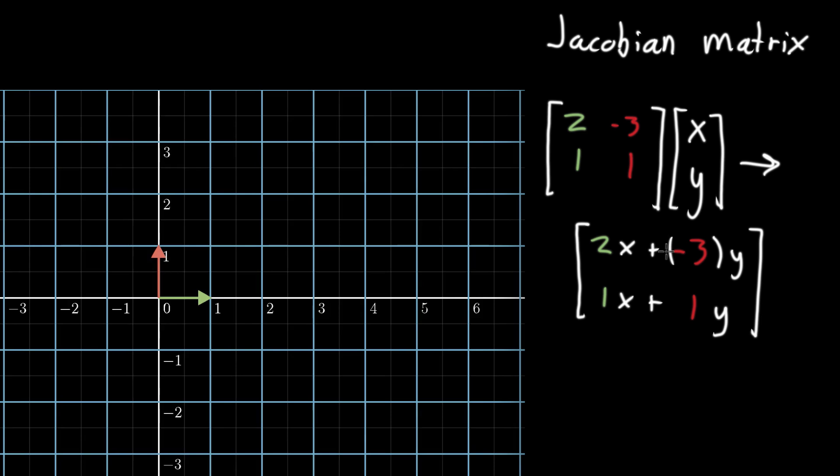Even if you know how to compute it, there's still room for a deeper geometric understanding of what it actually means to take a vector (x, y) to the vector (2x + (-3)y, 1x + 1y). And there's also still a deeper understanding in what we mean when we call this a linear transformation.